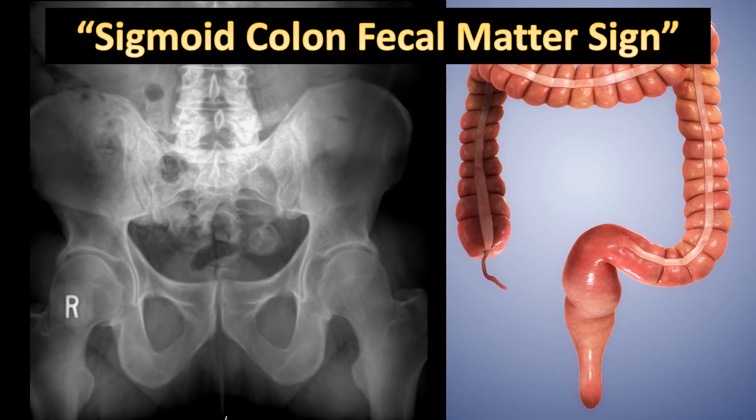Since there is no named radiographic sign for this appearance and I have doctors ask me about it all the time, I'm going to call it the sigmoid colon fecal matter sign. That's just that round density in the left aspect of the pelvic basin representing prominent contents inside of the sigmoid colon.